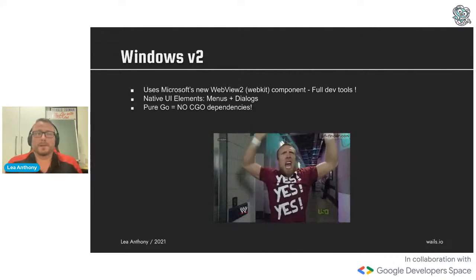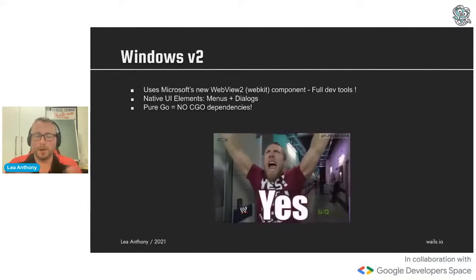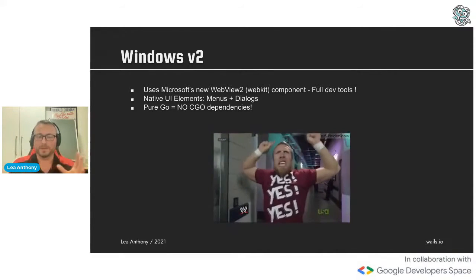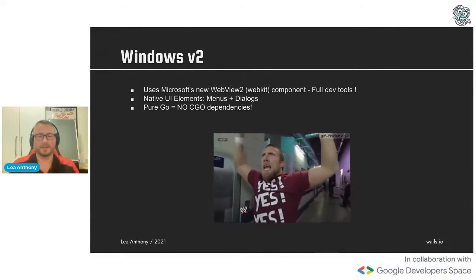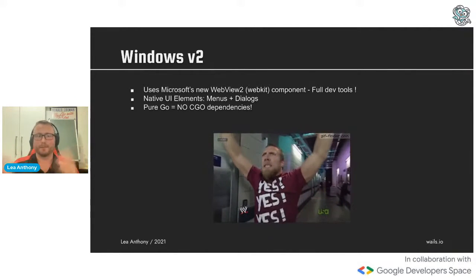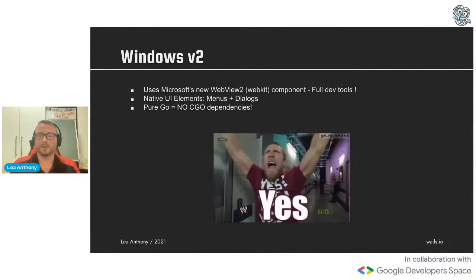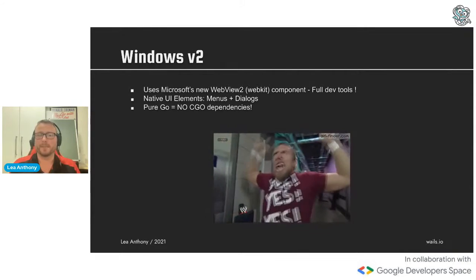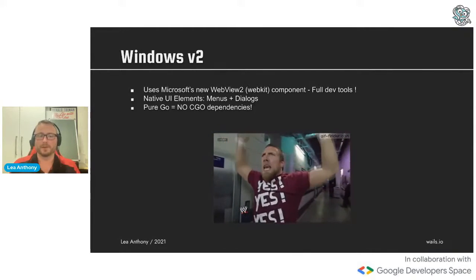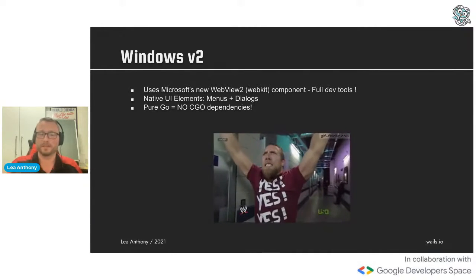Windows version two is pure Go - no CGo dependencies. The big problem with using CGo on Windows is you need a MinGW compiler, which is very tricky to set up and get right. It's now pure Go, so everybody was super happy about that.